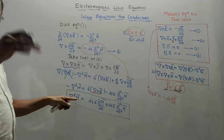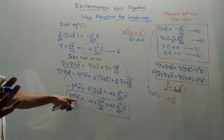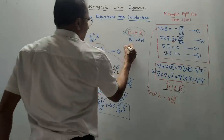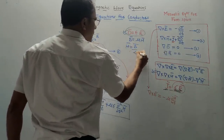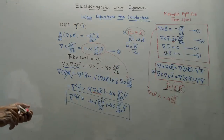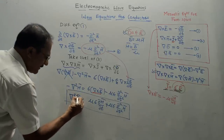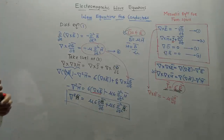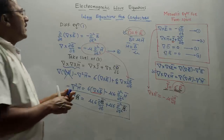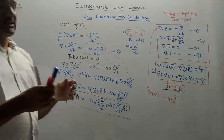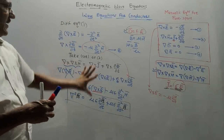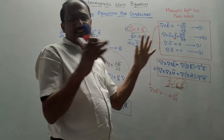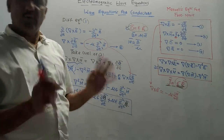For the fourth equation in terms of B̄: since B̄ = μH̄, directly replace H̄ with B̄ wherever it appears. This is the fourth wave equation for conductors in terms of B̄. That's it for today's video — these two derivations (free space and conductor) are very important. Follow this procedure strictly to make the derivations simple. Thanks for watching.